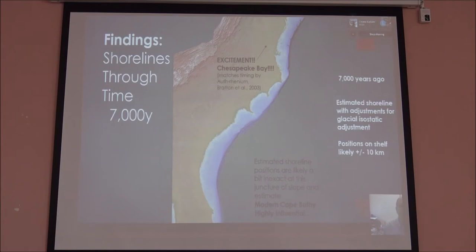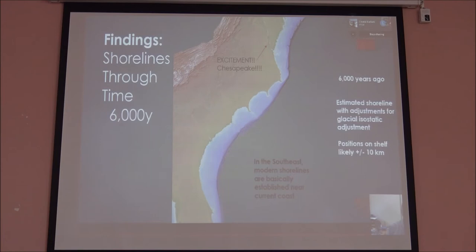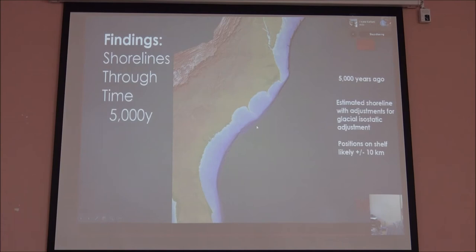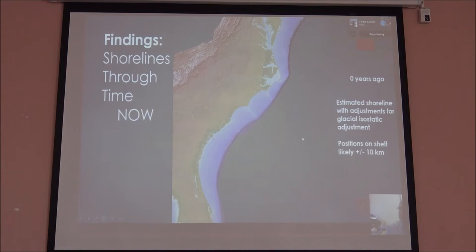This is when Clovis showed up, and we finally start drowning between 11 and 10,500. Now we race the shoreline every 500 years — notice how quickly it's moving now because it's going across that gentle slope. Now we're getting into the time period where the data aren't working too much except up here in the Chesapeake Bay, where this large estuary — the river was just being backed up. This model matches the timing by other researchers who say the Chesapeake Bay started becoming partially saline about 7,000 years ago. In the southeast about 6,000 years ago, the modern shorelines are basically right here. 5,000, 4,000, and then the modern.